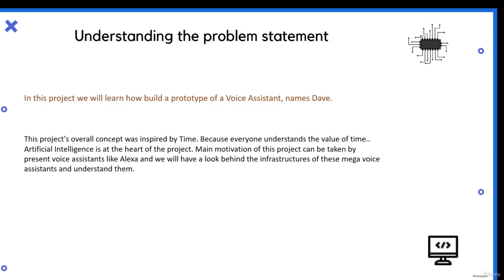Now what will be the problem statement? We'll be building a prototype of a voice assistant named Dave. The overall project concept was inspired by time, because everyone understands the value of time. Artificial intelligence is at the heart of this project. The main motivation can be taken from present voice assistants like Alexa. We'll look behind the infrastructure of these mega voice assistants, understand the tasks they perform, the libraries involved, and the logic behind it. It is very simple and when you come to know, you'll be amazed to see that you can do the same thing these giant companies do.